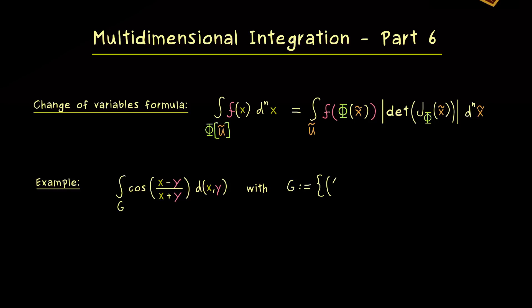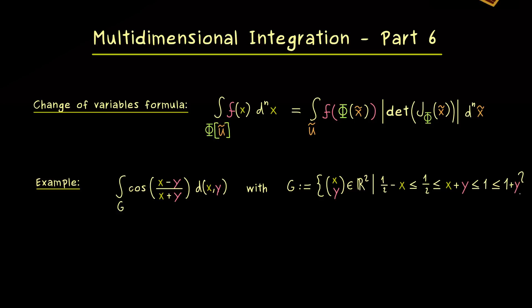The domain g is a subset in R2, so we consider x and y as a vector in R2. It is defined by four inequalities: (1/2 minus x) is less than or equal to 1/2; 1/2 is less than or equal to (x plus y); (x plus y) is less than or equal to 1; and 1 is less than or equal to (1 plus y). That's the full definition of region g.